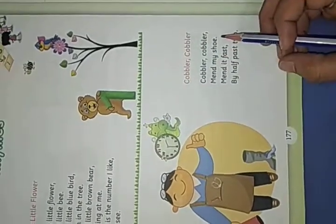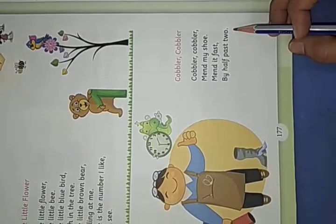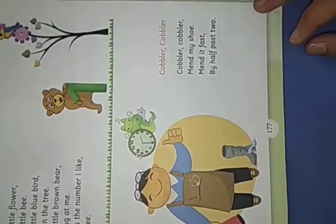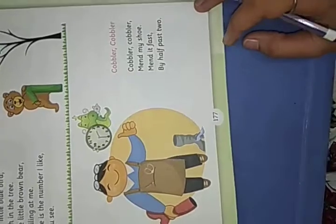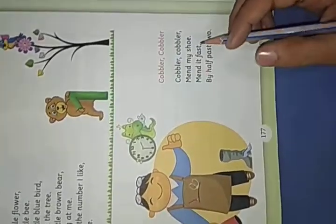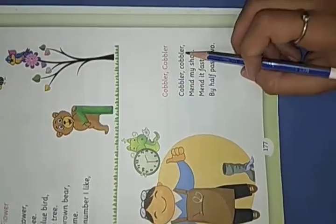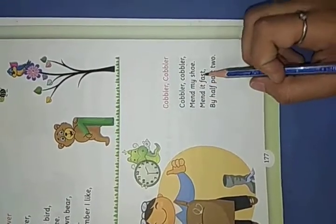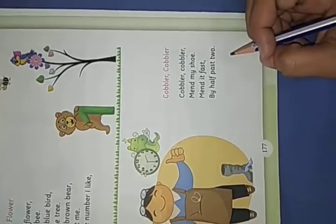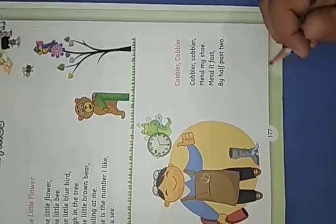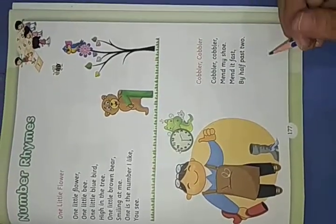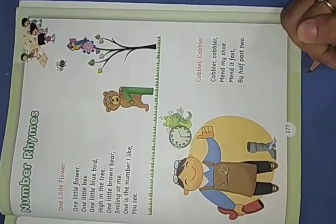Cobbler, Cobbler, man my sue, man did fast, by half past 2. Aapko sirf ye rhymes learn karni hai achhe se — jo hum video paste karte hain wo rhymes prepare karni hain. Aur notebook pe bhi jo spelling dete hain numbers ke, wo abhi revise karke yaad karne hain. Okay, bye bye.